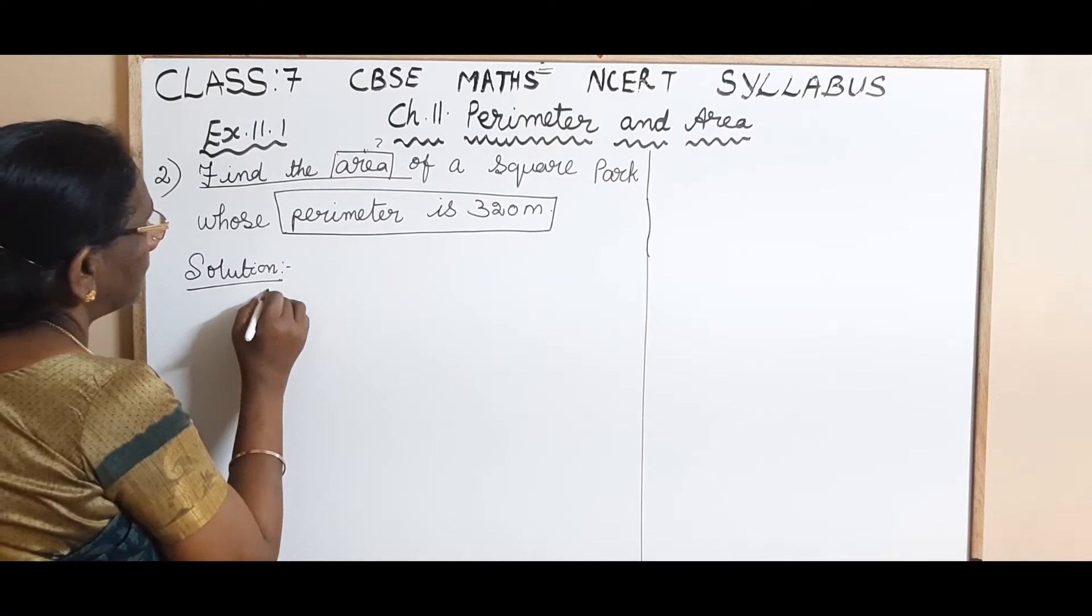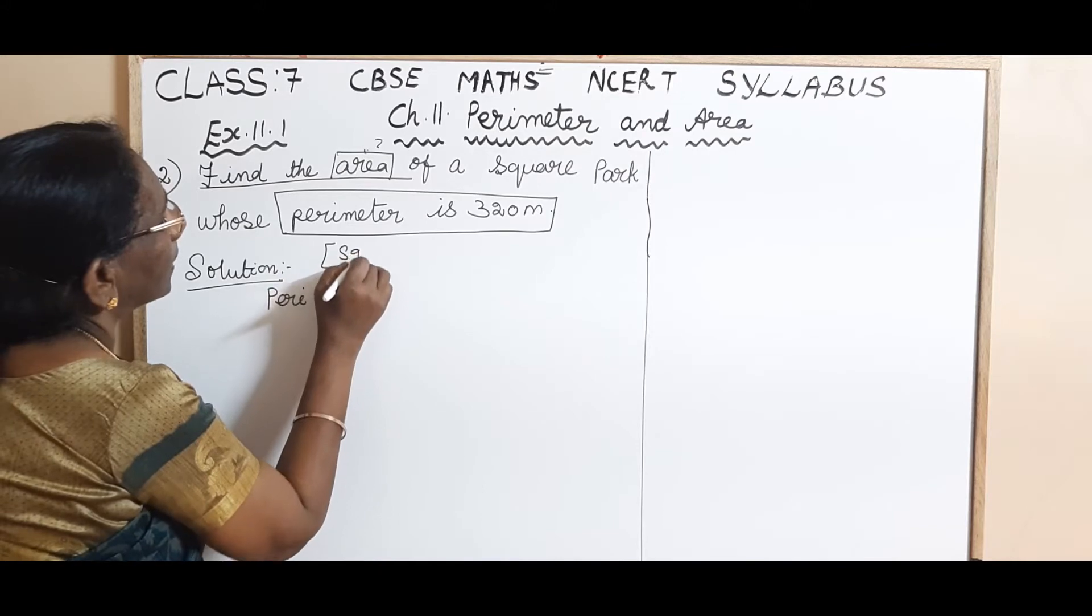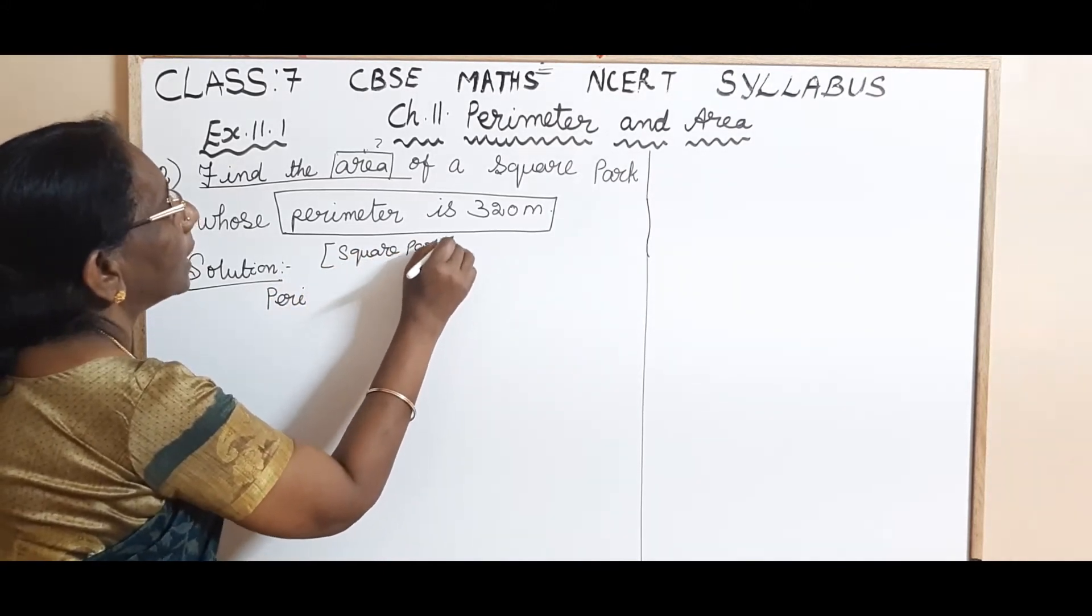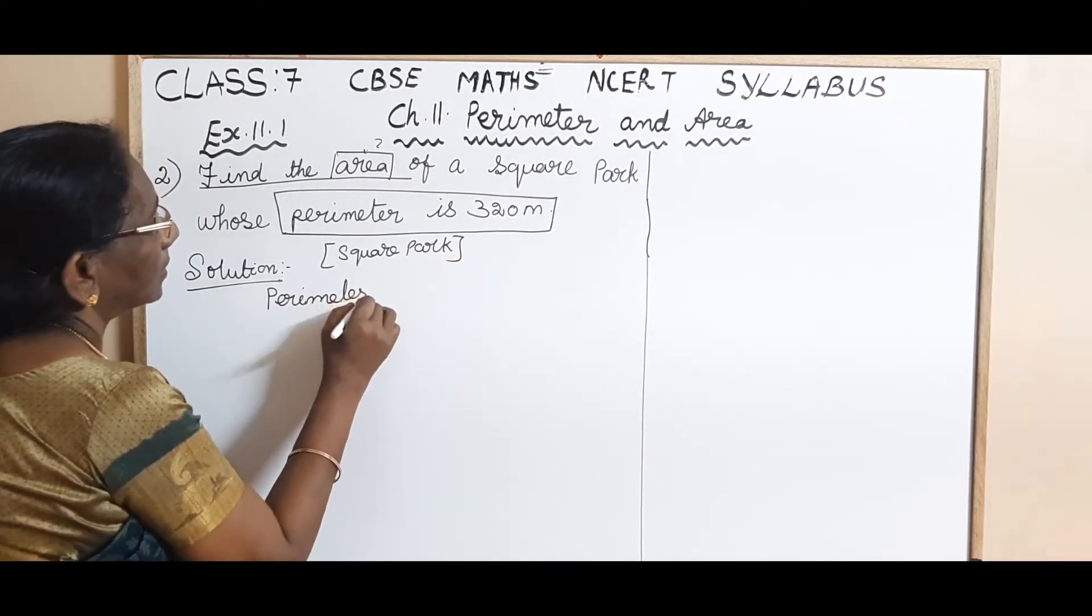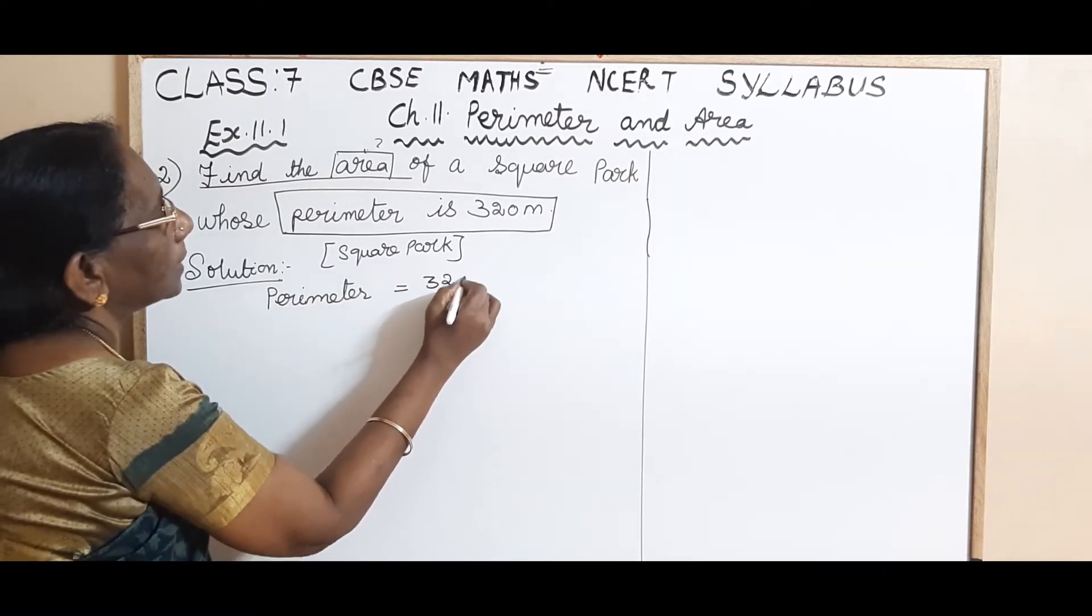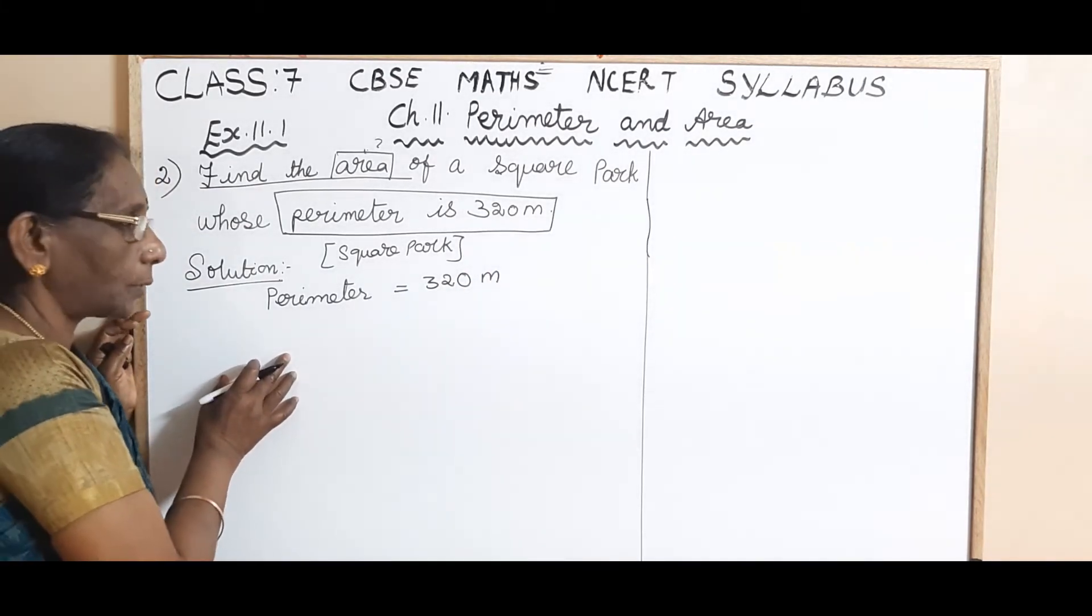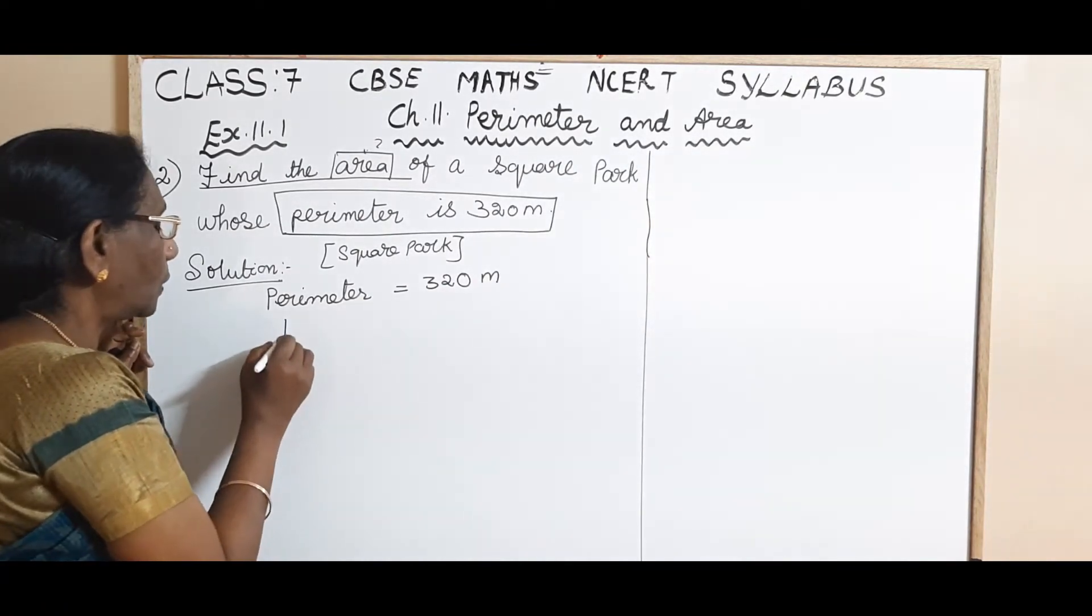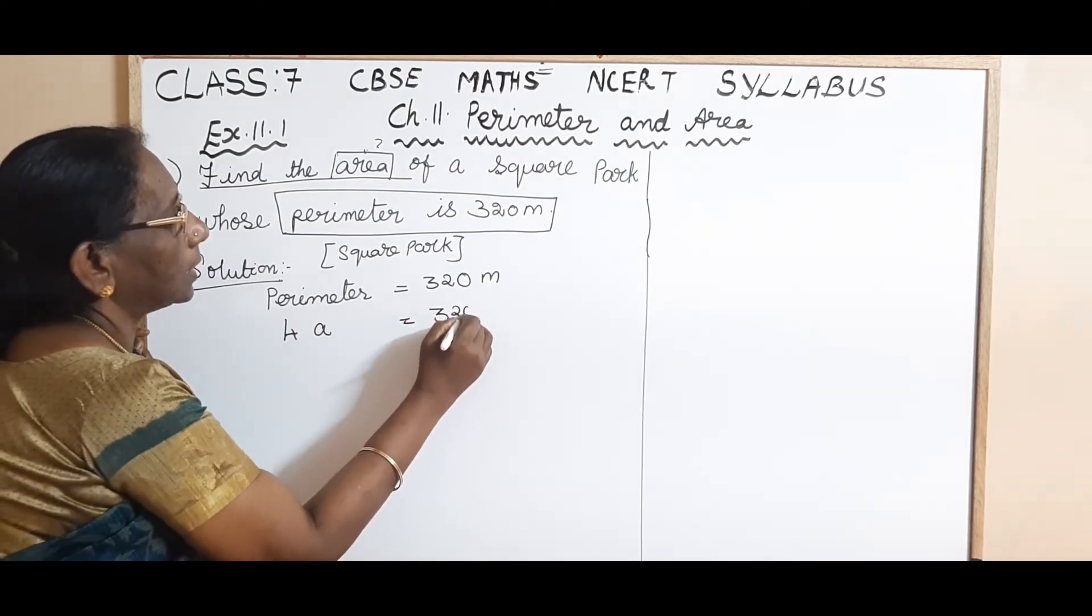Perimeter. If you want, you can write square park. The shape is what? Square park. Perimeter is equal to 320 meter. What is the formula for the perimeter of a square? 4A. Okay.